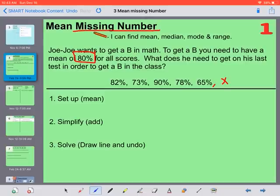So to find the mean, we add up all the numbers and divide by how many we have, and we'll have 1, 2, 3, 4, 5, 6 now total. So when we add them all up and divide by 6, we should get 80%. So what we're going to do is we're going to add up all of our numbers, but then we're also going to have to add x, and we don't know what x is, so we're going to add them all up and divide by 6.